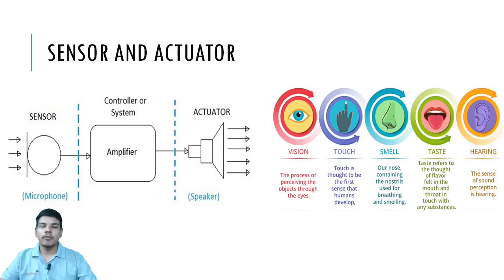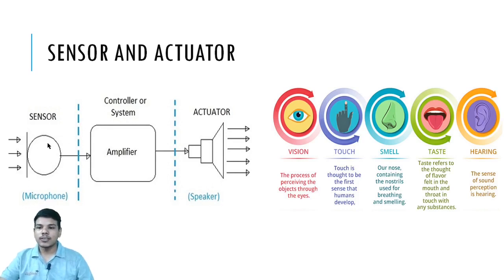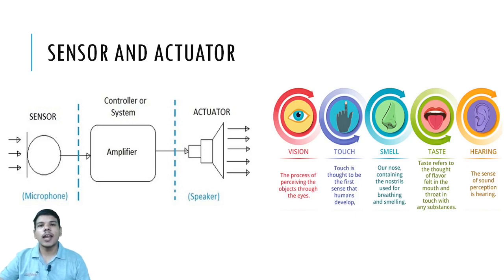Today we will talk about a very important chapter of this course: sensors and actuators analogy. As an example, the sensor is our microphone — we use it to record audio — the controlling and amplifying unit is our CPU, and the speakers provide output, which is the sound you are hearing. This is the input and output analogy we will use in electronic circuits in further projects.